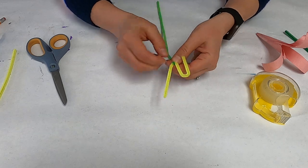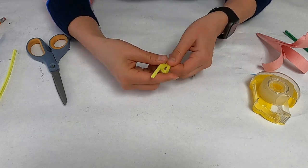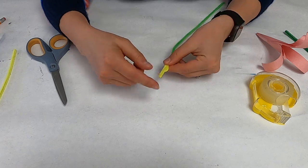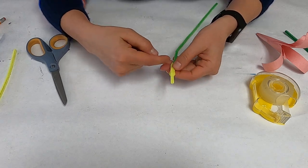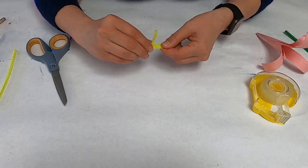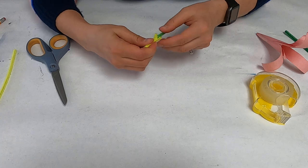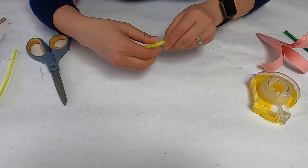Then we're going to take this yellow and we're going to wrap it down. You don't need to wrap it super tight. You're just wrapping it all the way down until you meet the green part.